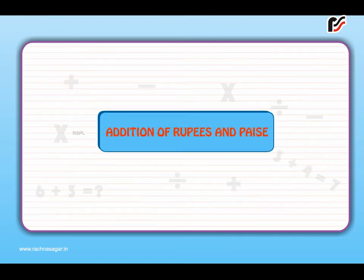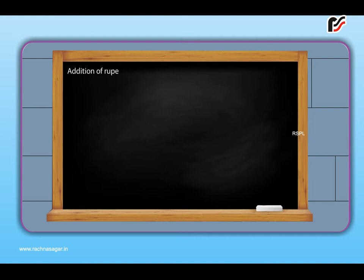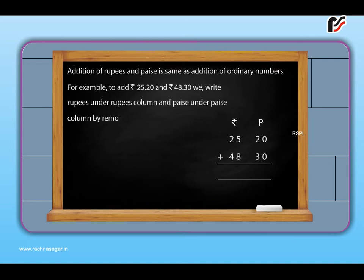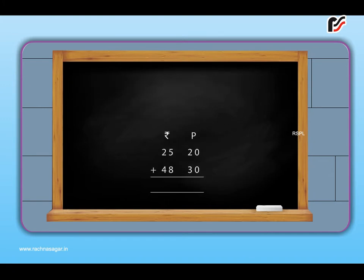Addition of rupees and paise. Addition of rupees and paise is same as addition of ordinary numbers. For example, to add rupees 25.20 and rupees 48.30, we write rupees under rupees column and paise under paise column by removing the point between them. Now, 0 plus 0 is equal to 0, 2 plus 3 is equal to 5, 5 plus 8 is equal to 13. 1 carried over plus 2 plus 4 is equal to 7. Thus, the sum is rupees 73.50.